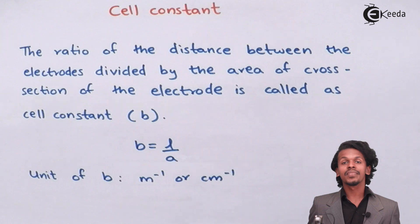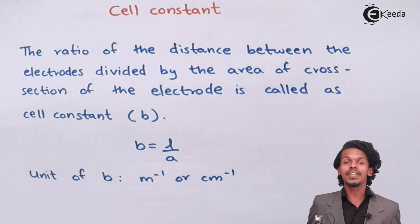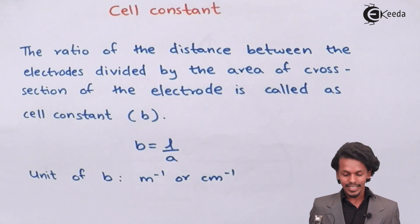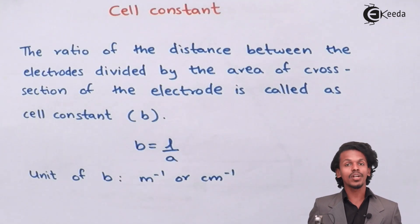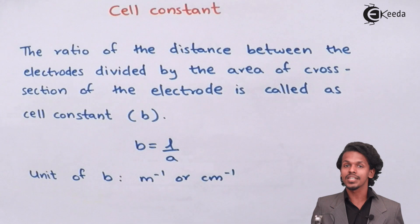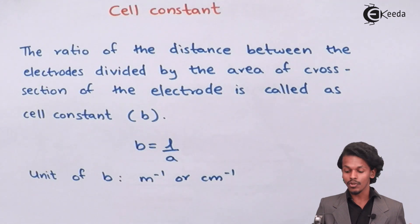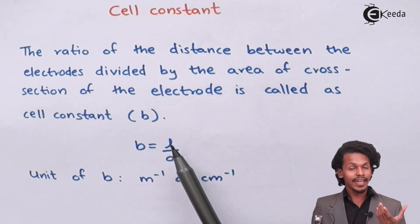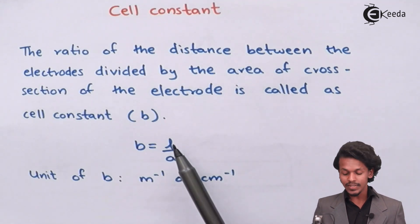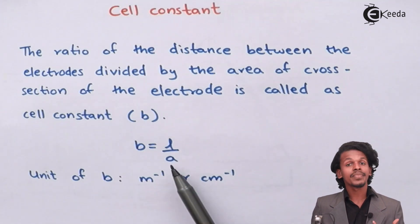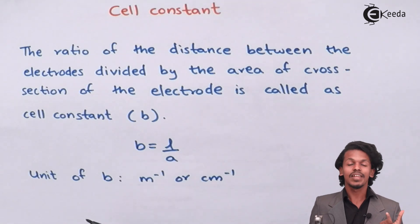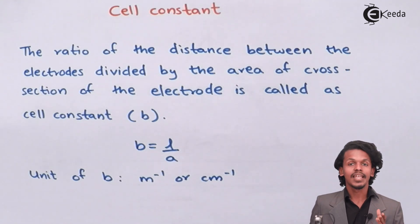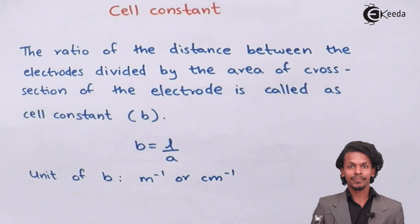For a particular cell, the cell constant will remain the same because it is not dependent on the concentration. It depends on the length between the two electrodes and the area of cross section of the electrode, both of which remain constant throughout the electrolytic cell.